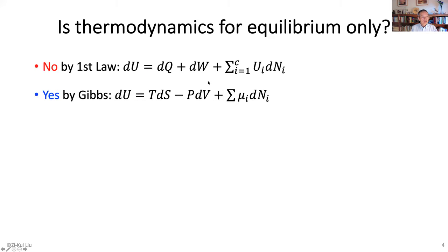However, if we look at the combined equation developed by Gibbs, it is for equilibrium only. The difference now is that the heat part is temperature times entropy dS, the work term, and the mass term uses chemical potential instead of internal energy. This equation developed by Gibbs is for equilibrium only.